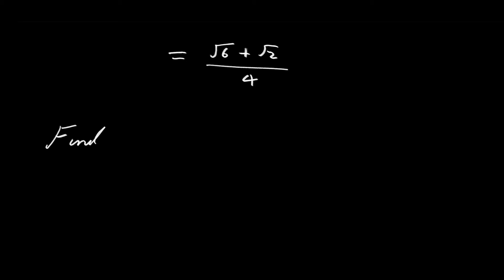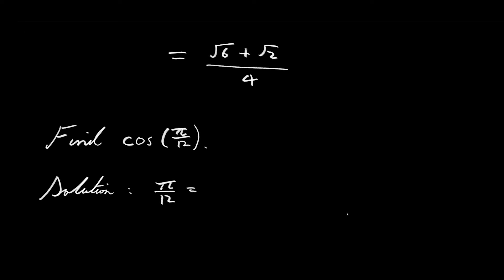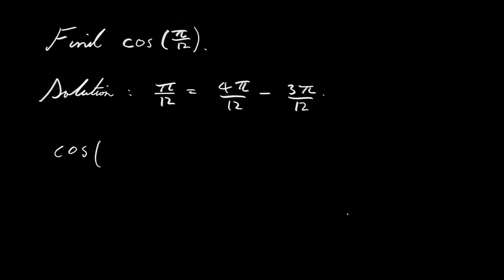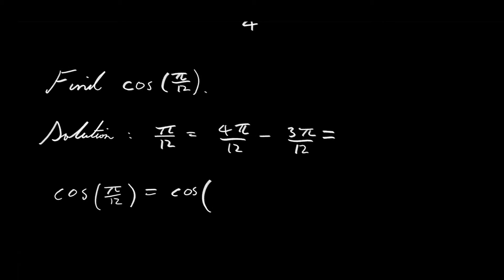Suppose we are asked to find the cosine of π over 12. Now π over 12 is not one of the special angles, but we can write it as the difference of special angles. π over 12 equals 4π over 12 minus 3π over 12, and these fractions simplify to π over 3 minus π over 4, just like in the previous example.